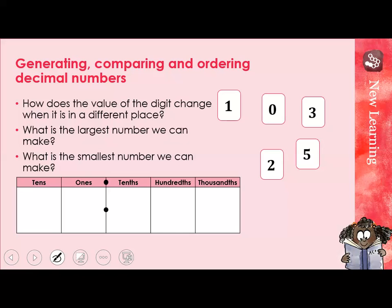So in this lesson we are going to be comparing decimal numbers. Let's take these five digits — 1, 0, 3, 2, and 5 — and arrange them in any order to create a decimal number using a place value chart. Putting them in the order they appear: 1, 0, 3, 5, 2. We've got 1 ten, no ones, three tenths, five hundredths, and two thousandths. Well done if you identified that number as 10.352. We say the digits after the decimal point from left to right — 10.352 — not 10.352 as if it were a whole number.